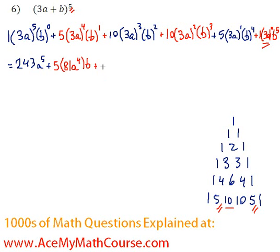Over here we get 10 times 3 to the 3 is 27, a cubed, b squared. I'll continue to simplify in the next step. And here we have 10 times 3a squared, 9 of course. 9a squared times b cubed.